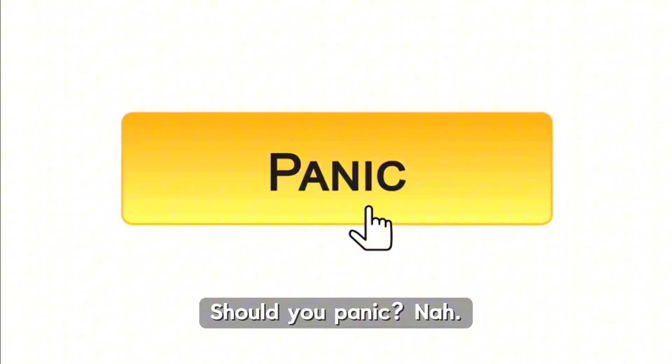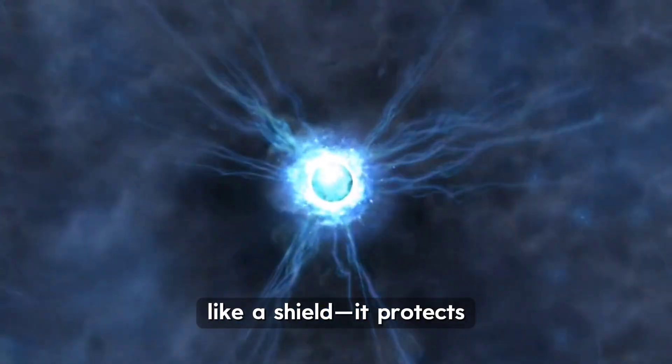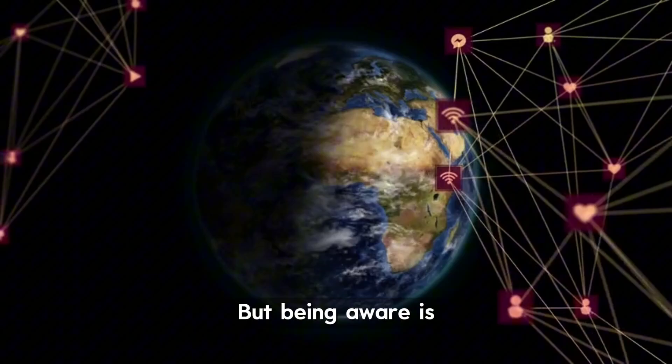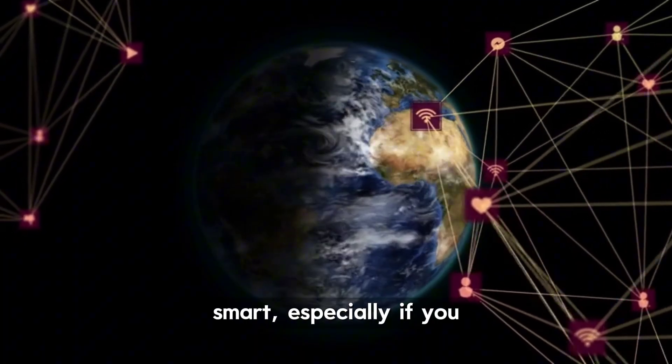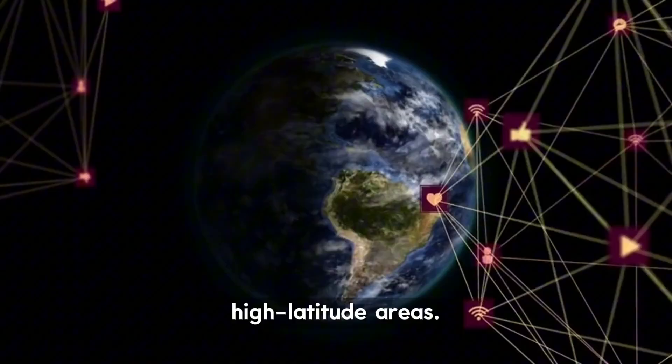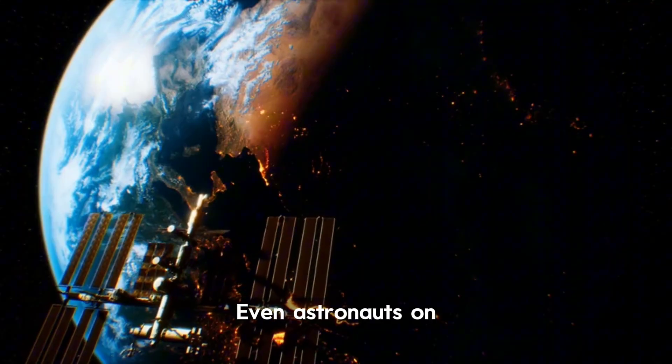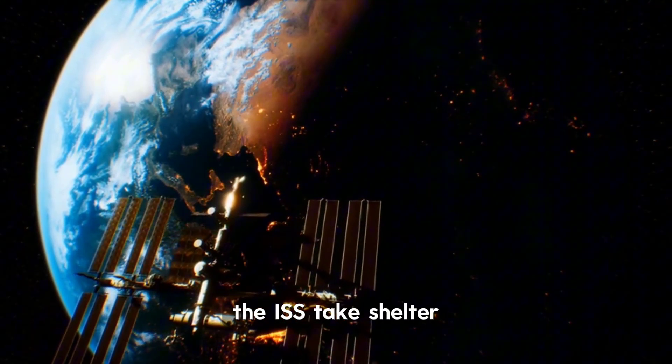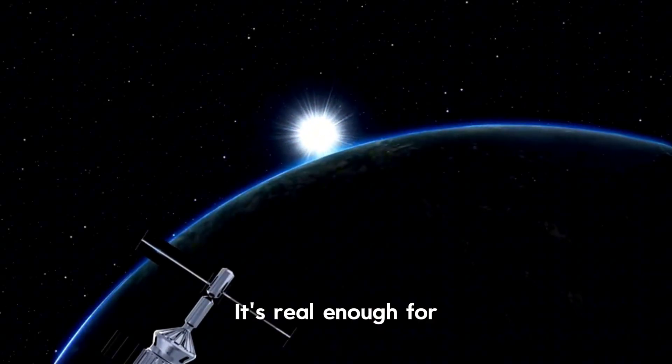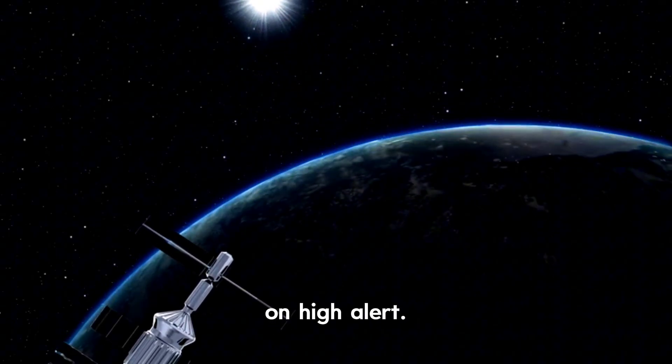Should you panic? Nah. Earth's magnetic field is like a shield that protects us from most of the harmful radiation. But being aware is smart, especially if you rely on satellite-based services or live in high-latitude areas. Even astronauts on the ISS take shelter during strong solar flare warnings. It's real enough for space agencies to stay on high alert.